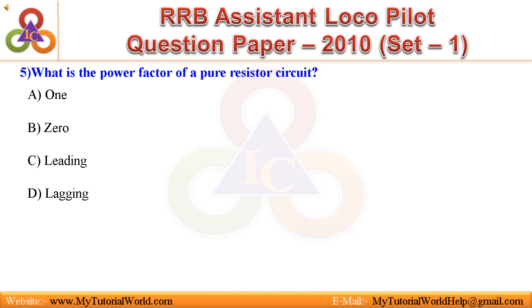Question 5: What is the power factor of a pure resistor circuit? A. 1, B. 0, C. Leading, D. Lagging. Answer is 1.